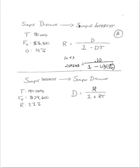It would be 10.5263, or we could just say 10.53%. So in this example here, we're converting from a simple discount to a simple interest.